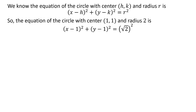So the equation of the circle with center (1, 1) and radius square root of 2 is: (x - 1)² + (y - 1)² = (√2)².